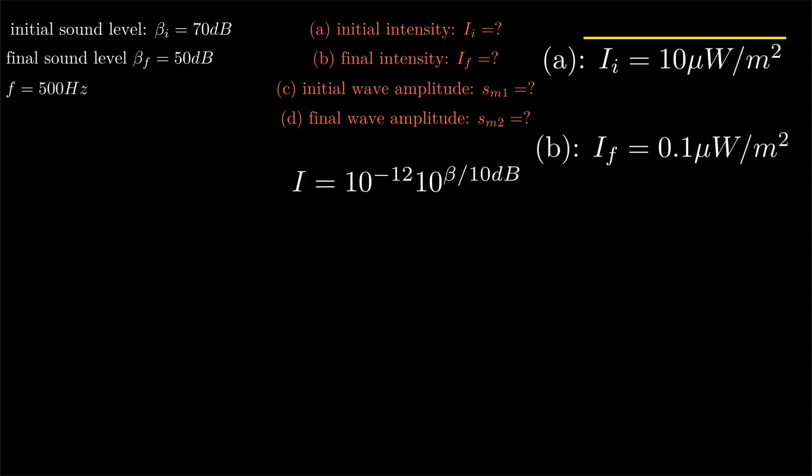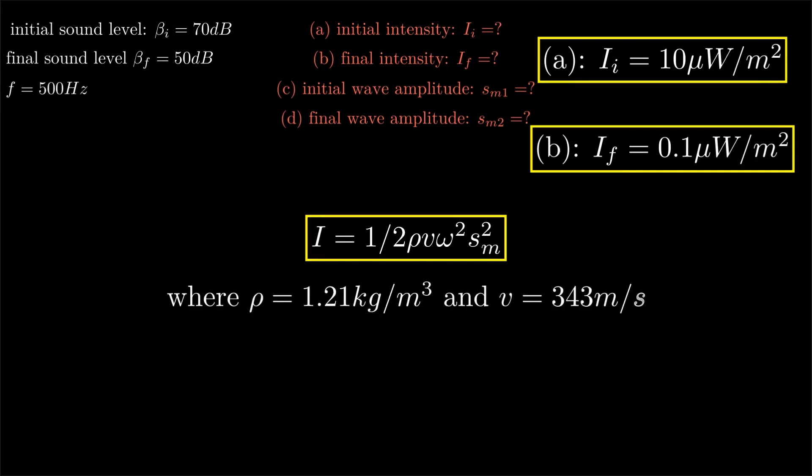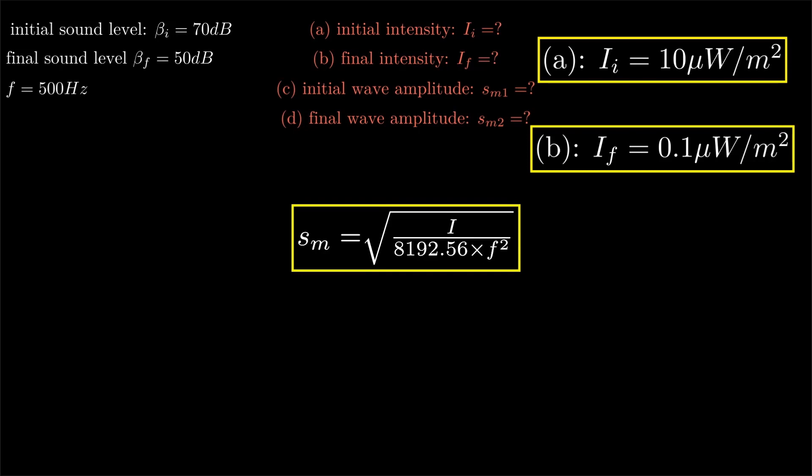Now we will calculate the wave amplitude. The intensity I is related to displacement by this equation: I equals half rho v omega squared sm squared, where rho is 1.21 kilograms per meter cubed and velocity of sound in air is 343 meters per second. After substituting values, we get 8192.56 multiplied by omega squared sm squared. After rearranging, sm equals the square root of I divided by 8192.56 times frequency squared.